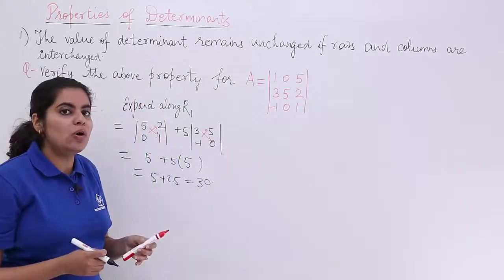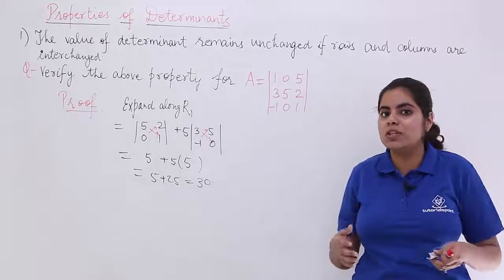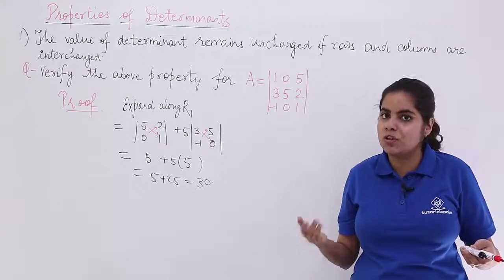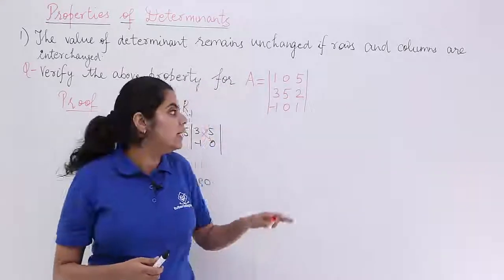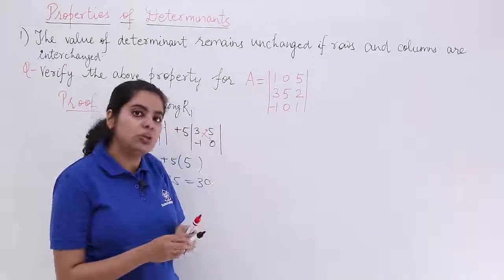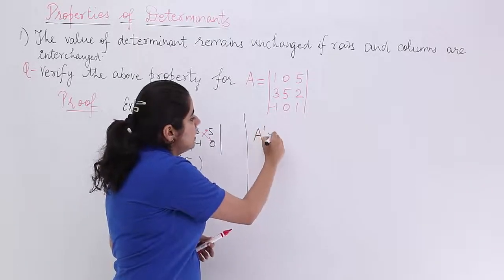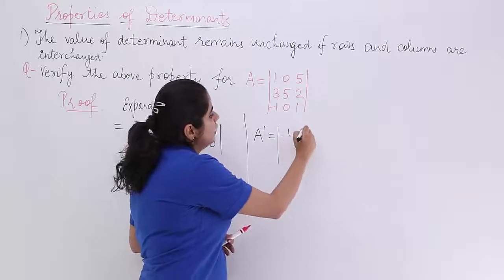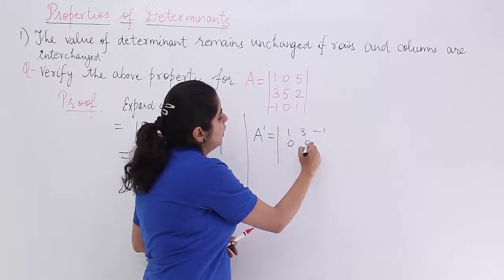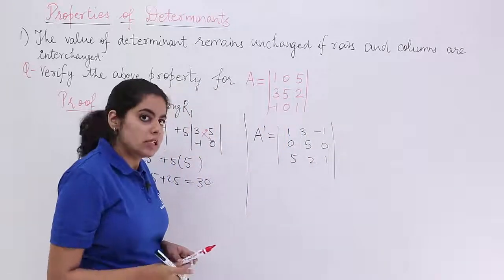If you now have a determinant which is having the rows and columns interchanged, the values are to be changed or not, that we have to evaluate. If the given determinant is determinant A, let me write a new determinant. That determinant I suppose is A dash. It has the rows and columns interchanged. So it is 1, 3, minus 1, 0, 5, 0, 5, 2, 1. This is what we have done.